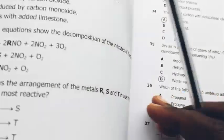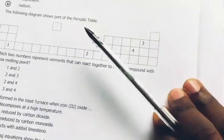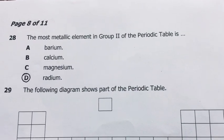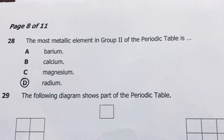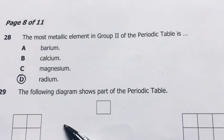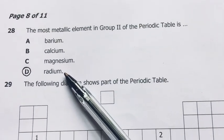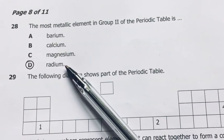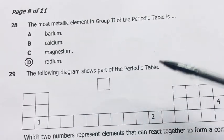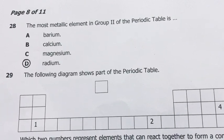Number 28. The most metallic element in group 2 of the periodic table is radium. The more you go down a group, the more the metallic characteristics come out. So radium, the one that is at the bottom of the group. D is the answer.